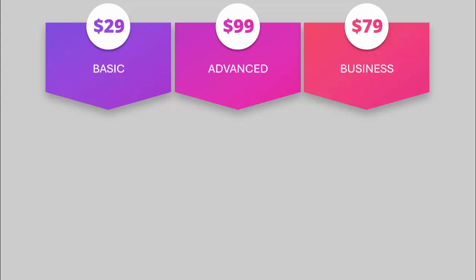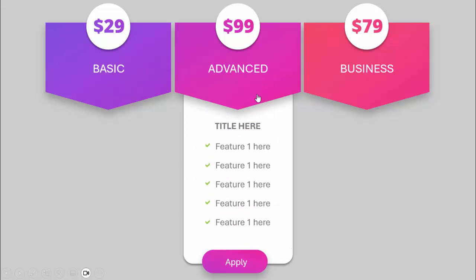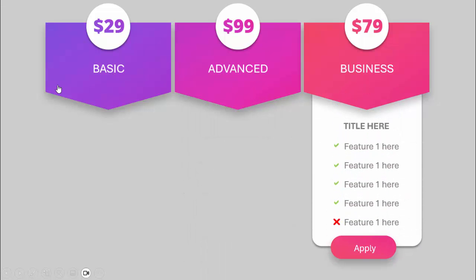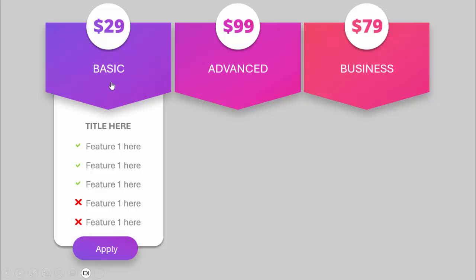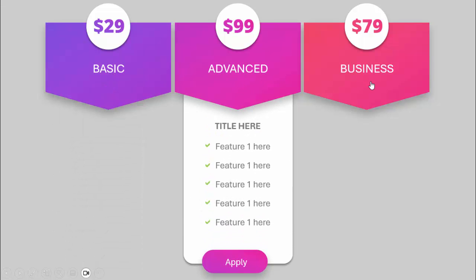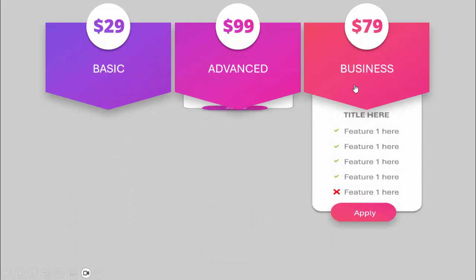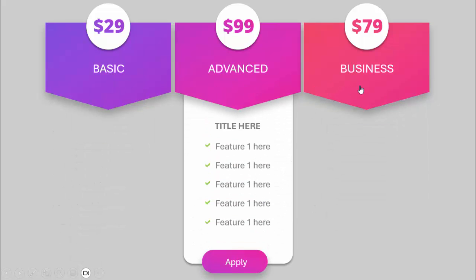In today's tutorial I'm going to show you how to create a click and reveal animation in PowerPoint. In this example I have created three pricing options: Basic, Advance, and Business. When you bring your cursor over them the pointer changes to a hand. When you click it will show the details of that option, and when you click another one, only that one will show while the others hide.